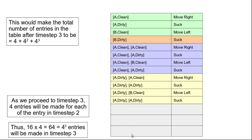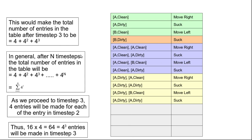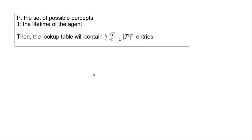In general, after n time steps the total number of entries in the table will be 4 + 4² + 4³ + ... + 4ⁿ, which is the summation from i=1 to n of 4^i. This is for our vacuum cleaner agent. In general, if P is the set of possible percepts and T is the lifetime of the agent, then the lookup table will contain the summation from t=1 to T of |P|^t number of entries.